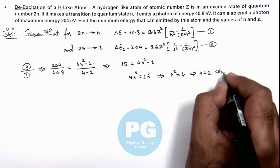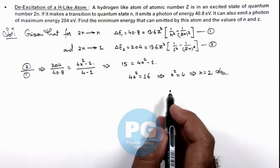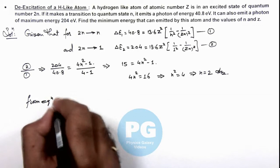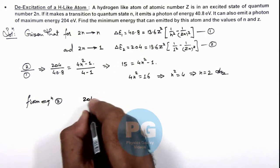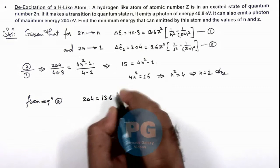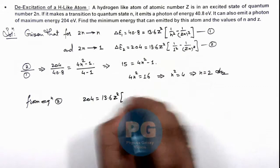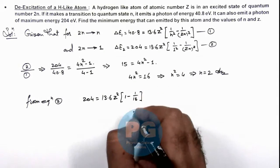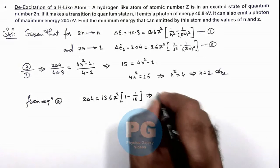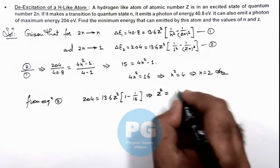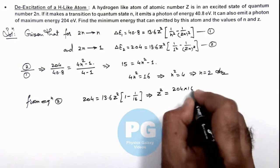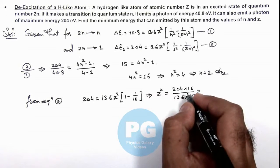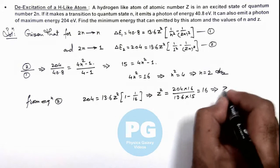This is one result of the problem — the value of n is 2. Once we have n, we use equation 2 directly: 204 = 13.6 × Z² × (1 − 1/4²), which is 1 − 1/16. Simplifying, Z² = (204 × 16) / (13.6 × 15) = 16. This implies the value of Z is 4. That is another result of the problem.